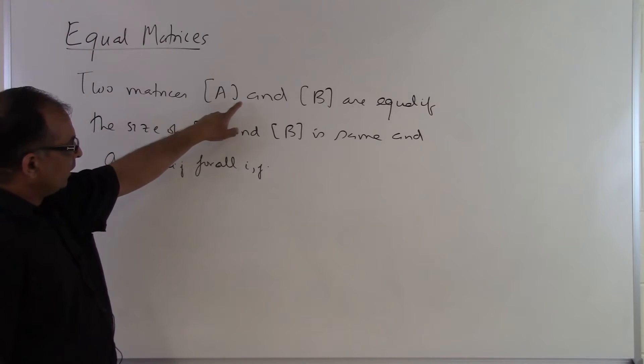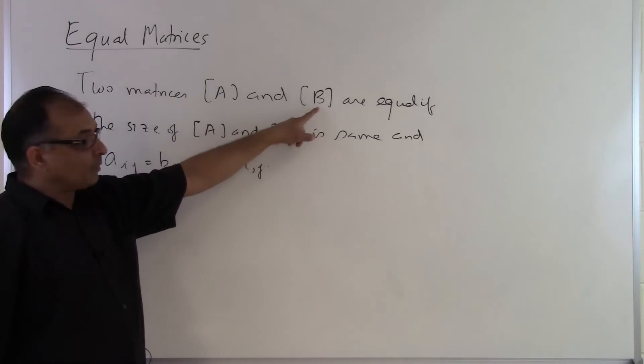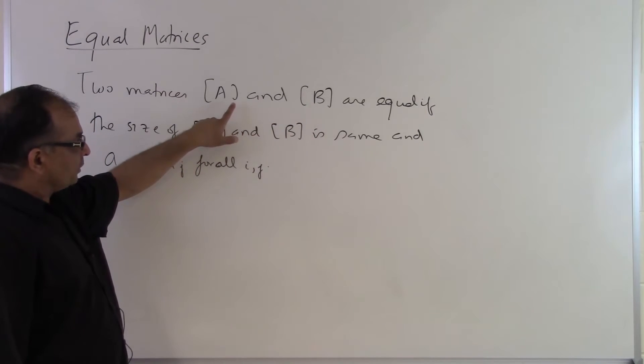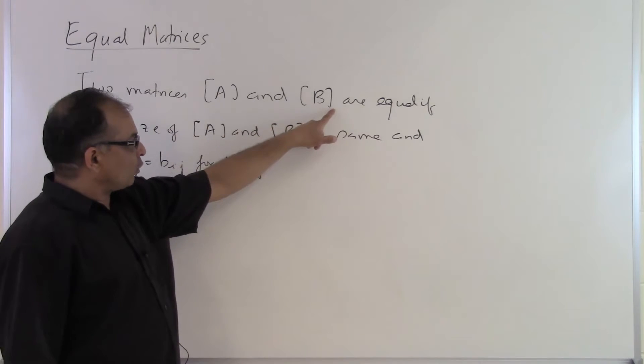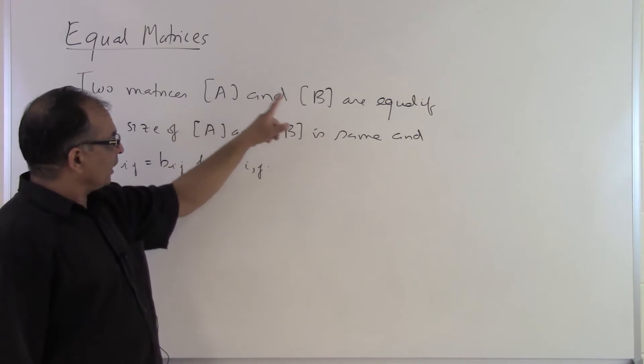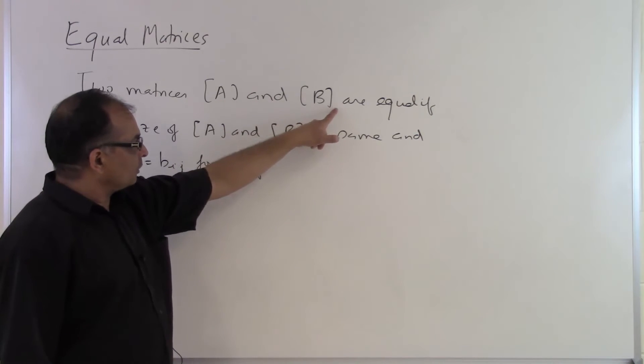So in layman's terms it means that if the A matrix is of order M by N then B also has to be order M by N. They don't have to be square matrices but the number of rows in A has to be the same as the number of rows in B. The number of columns in A has to be the same as the number of columns in B.